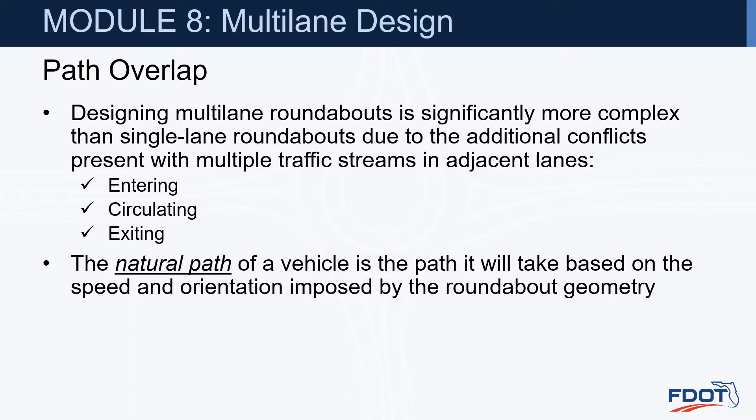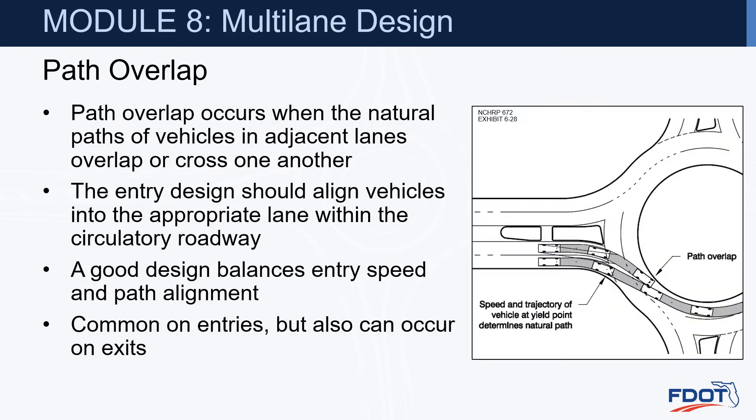Path overlap. Designing multilane roundabouts is significantly more complex than single-lane roundabouts due to the additional conflicts present with multiple traffic streams in adjacent lanes while entering, circulating, and exiting. The natural path of a vehicle is the path it will take based on the speed and orientation imposed by the roundabout geometry. Path overlap occurs when the natural paths of vehicles in adjacent lanes overlap across one another. The entry design should align vehicles into the appropriate lane within the circulatory roadway, balancing entry speed and path alignment. While this is common on entries, it may also occur on exits.